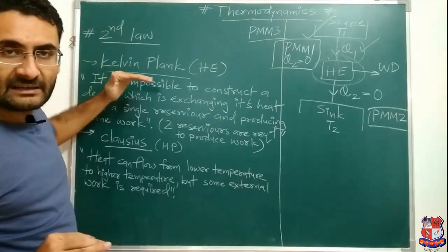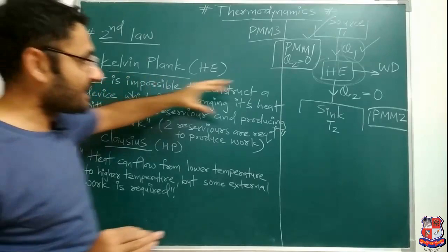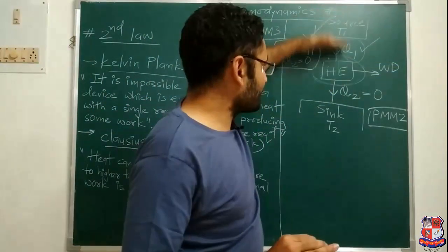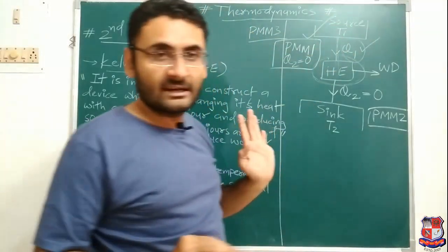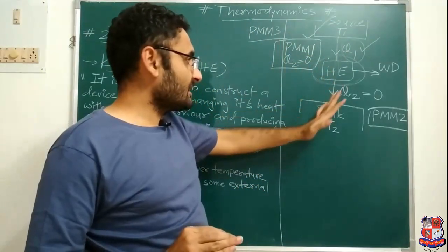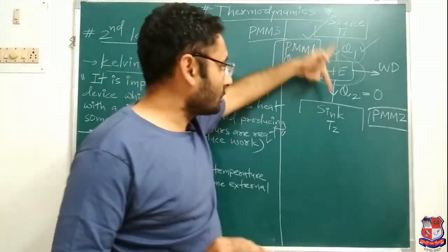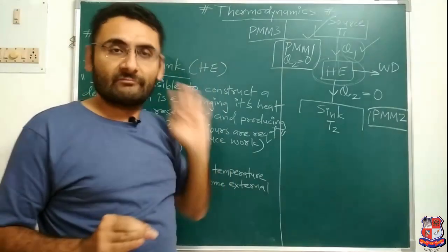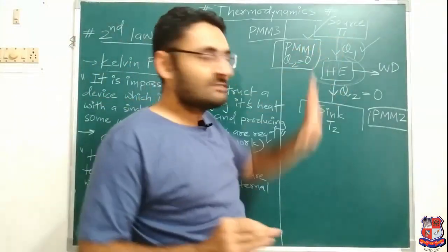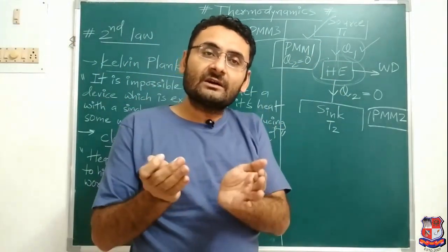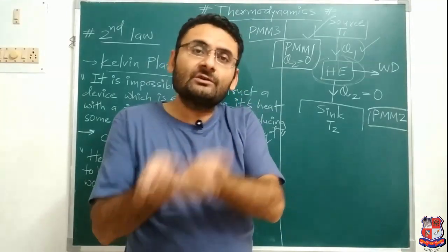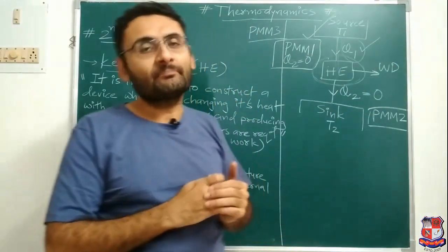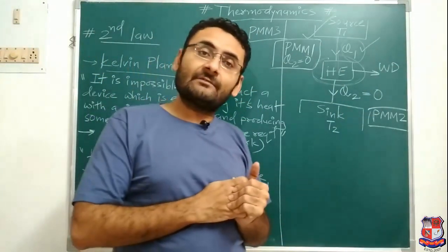To be clear about the Kelvin-Planck statement: it is impossible to construct a device which produces work by exchanging heat energy with a single reservoir. For work production, both reservoirs must be present and the heat engine must exchange heat with both. Heat engine means a device which converts chemical energy of fuel into heat energy, and finally that heat energy is converted into mechanical work.